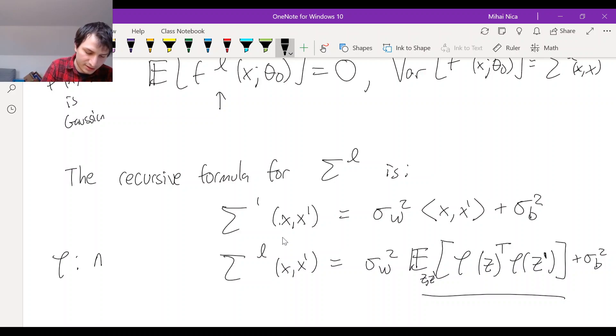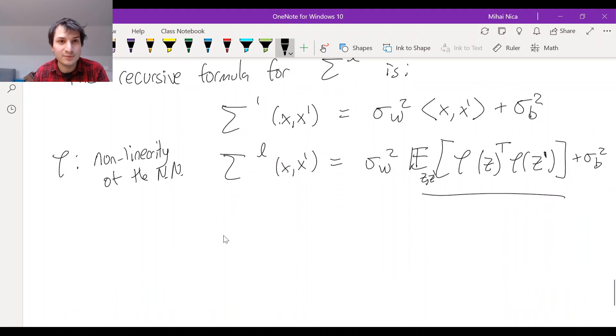Okay, and what are these random variables Z and Z prime? They're exactly distributed according to the layer from the previous layer. So Z and Z prime are Gaussian. Let me write it like this. Let's put them in a vector.